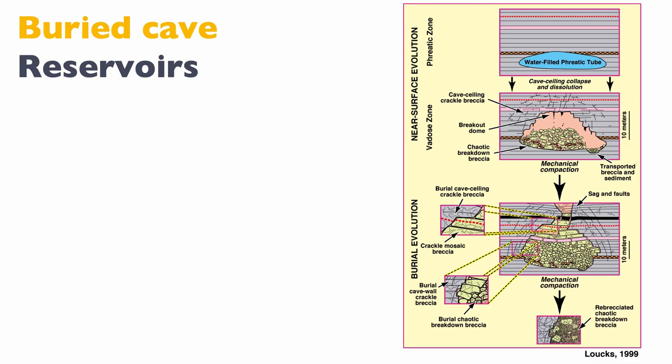You can also have later re-brecciation — re-brecciated chaotic breakdown breccia — which can still potentially preserve some porosity.